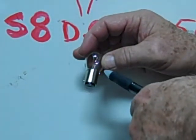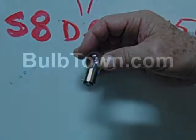This is an example of a number 1156 DC miniature bulb.